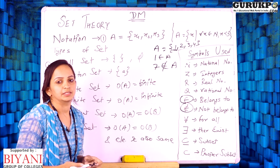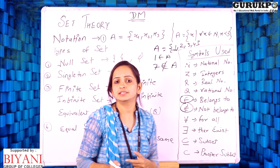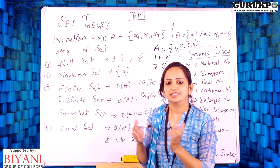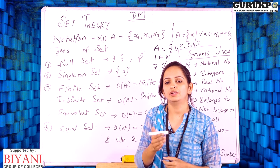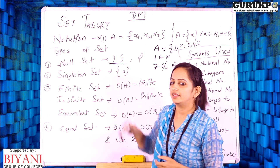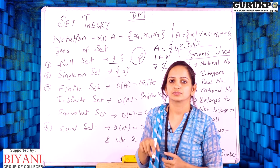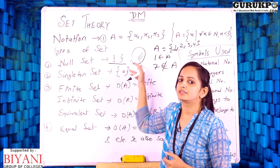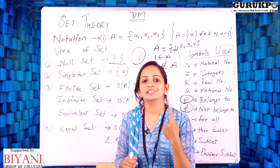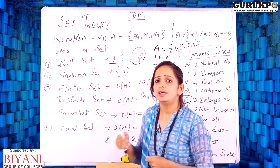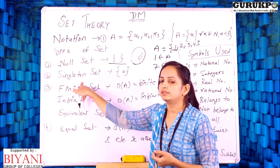Now we go to the types of sets in discrete mathematics. The very first is the null set. Null means nothing, so a null set is a set in which there is no element — it is an empty set. We can define it by empty curly braces or by the symbol phi (∅). The second type is the singleton set, which has only a single element. If a set has only one element A, then it is called a singleton set.